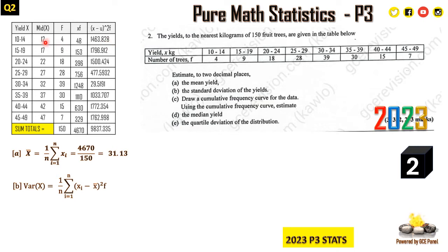So we do this for 12: 12 minus 31.13, when we square it and multiply by 4, we have 1463.828. The same thing now for 17: 17 minus 31.13, we square it and multiply the value by 9, and when we do that we're going to have 1796.912. We do that for all of these mid values onto 47: 47 minus 31.13, all of that squared times the frequency, which is 7, that will give us 1762.998.